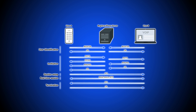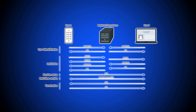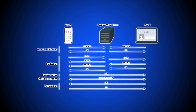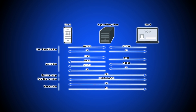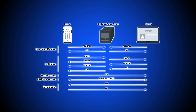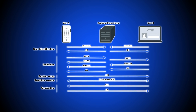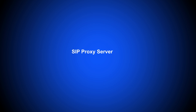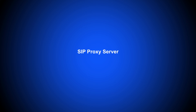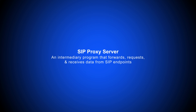As the most commonly used signaling protocol in VoIP, SIP works in conjunction with several other protocols that handle other aspects of the media session. A SIP proxy server is an intermediary program that forwards requests and receives data from SIP endpoints.